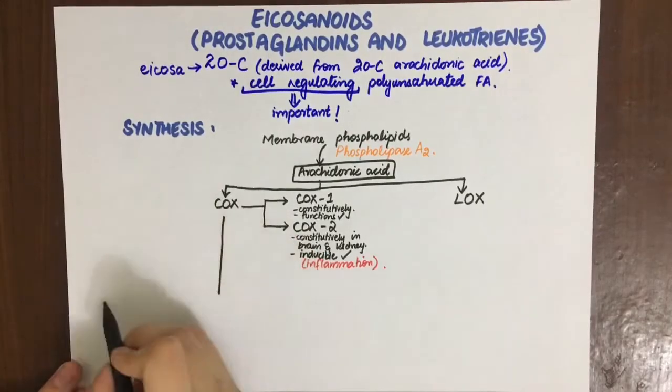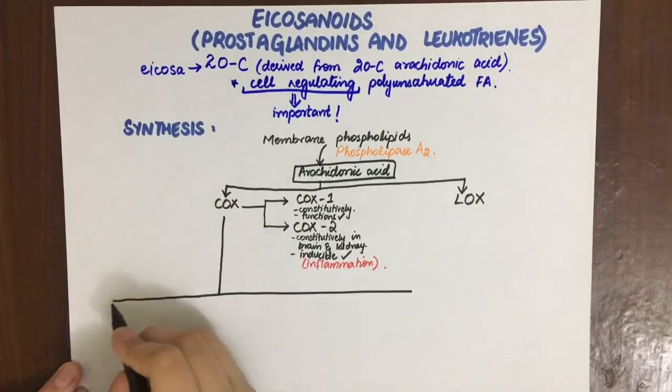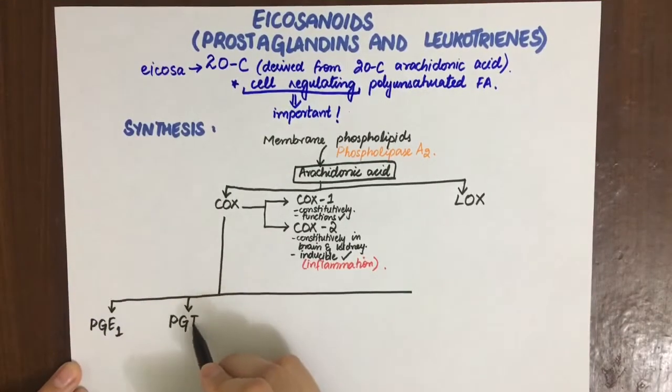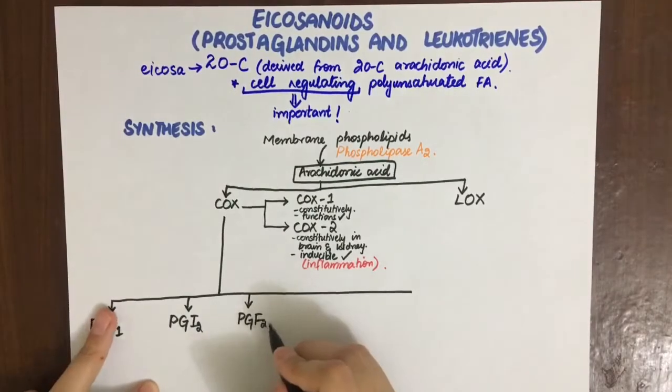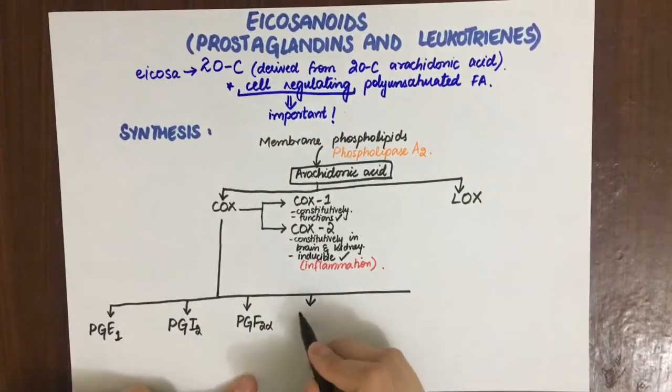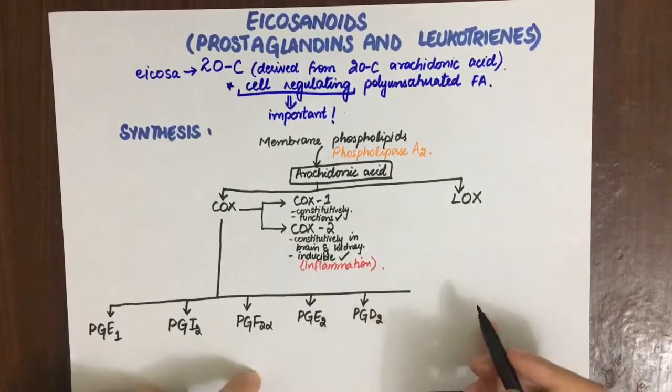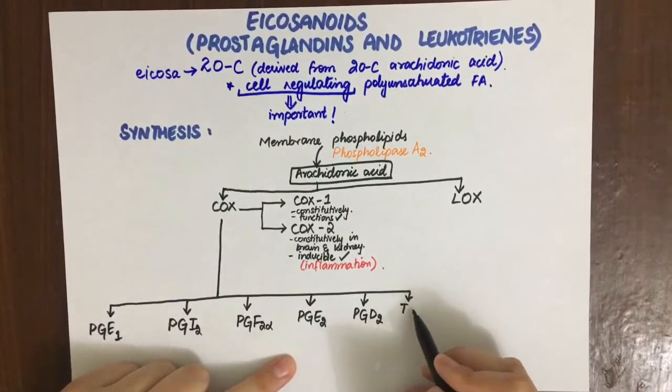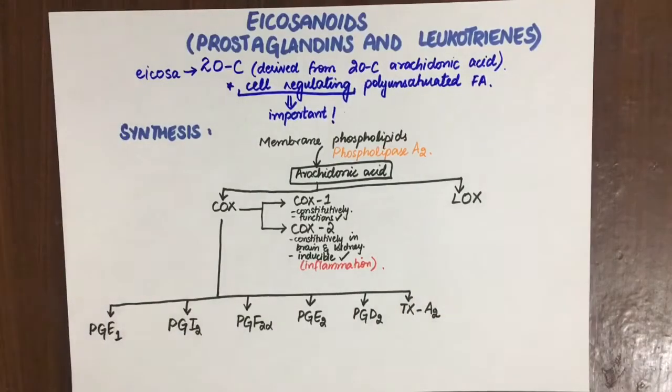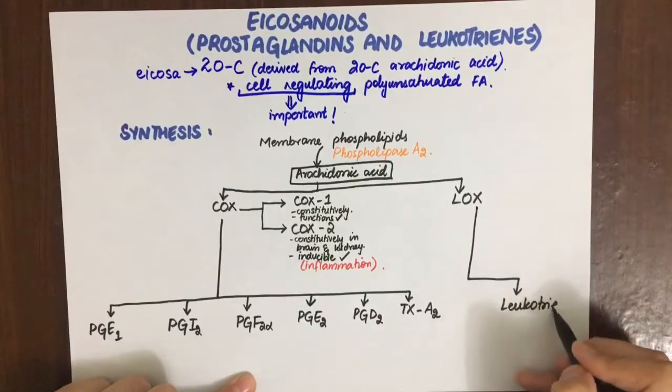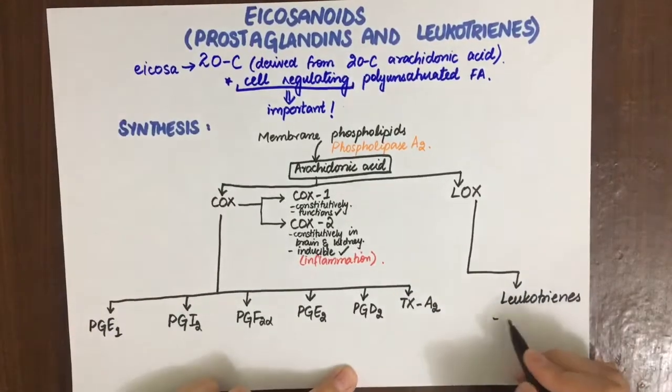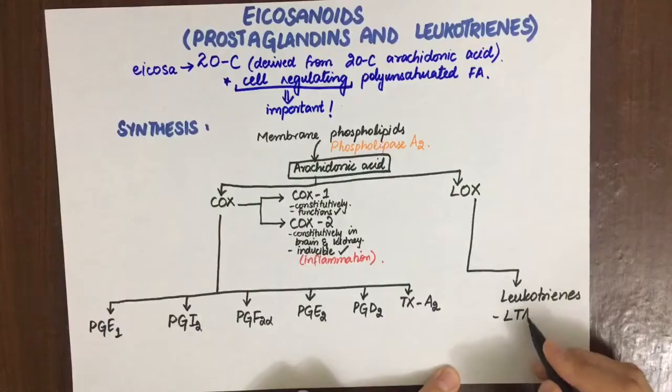COX-2 produces a number of prostaglandins: PGE1, PGI2, PGF2-alpha, PGE2, PGD2, and thromboxane A2.